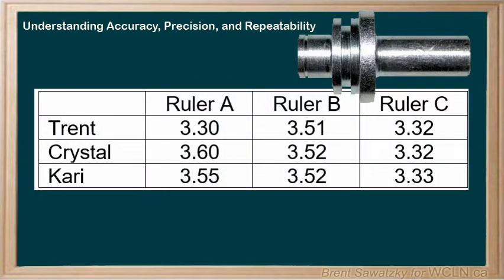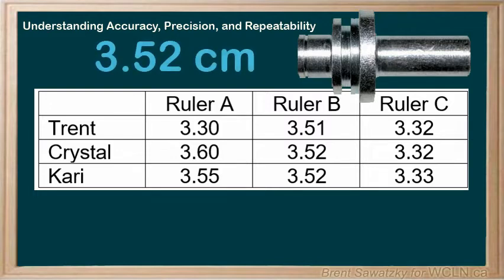We're told that this part is actually 3.52 centimeters. Knowing this, let's consider the results of our experiment. With ruler A, we can see it's hard for people to be repeatable here. We remember that ruler A had a precision of one centimeter.